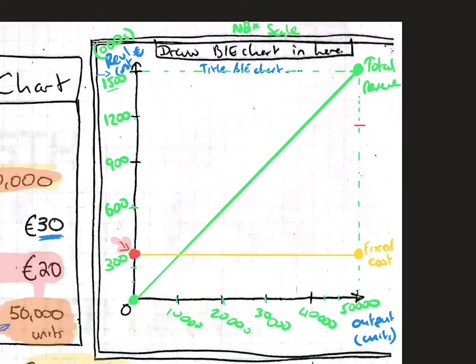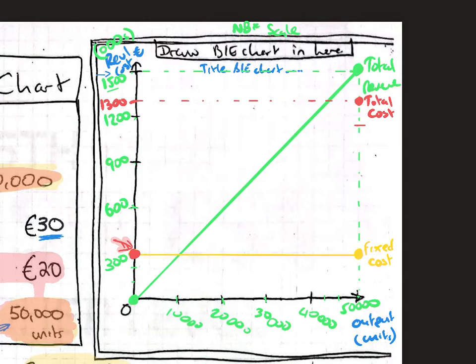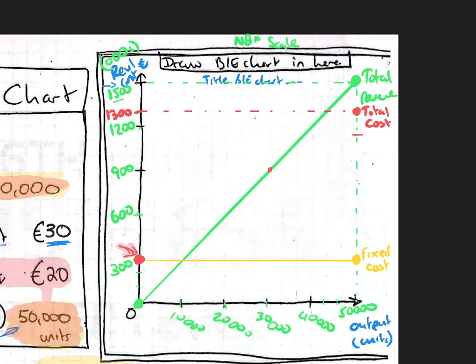To recap: the first point of our total cost line is at €300,000 — the same as our fixed cost starting point. We then find €1.3 million on the vertical axis, dot across to 50,000 units output, and mark that point. We connect those two red points together to draw the total cost line. Wherever the total cost and total revenue lines intersect is your break-even point — which in this case is at 30,000 units.